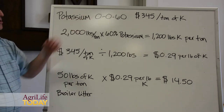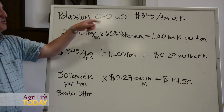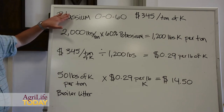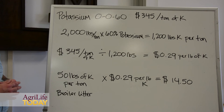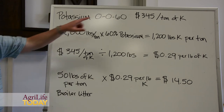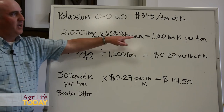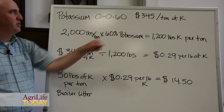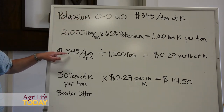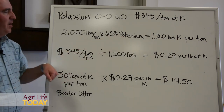Our traditional source of potassium is going to be 0-0-60, and that's going to cost us $345 a ton. The 0-0-60 tells us that 60% is potassium — for every 100 pounds of potash we put out, we would get 60 pounds of potassium. So if we want to calculate the value per pound, the cost is $345 a ton. That means 2,000 pounds times 60% gives us 1,200 pounds of potassium per ton of 0-0-60.